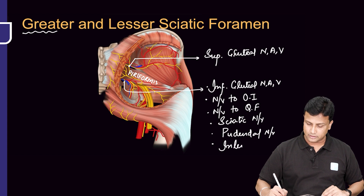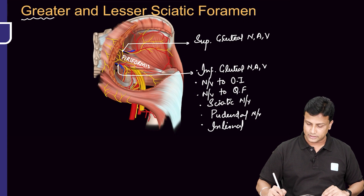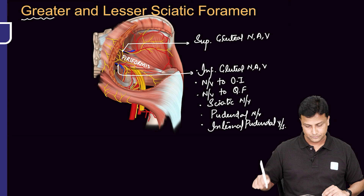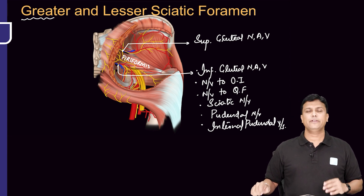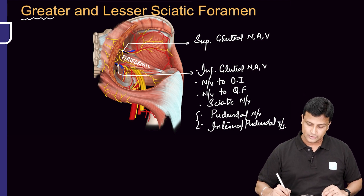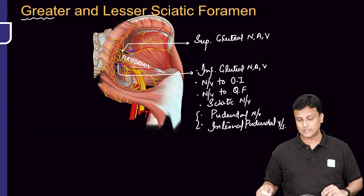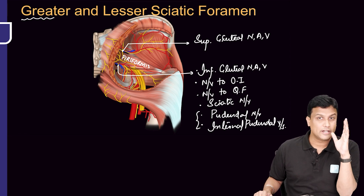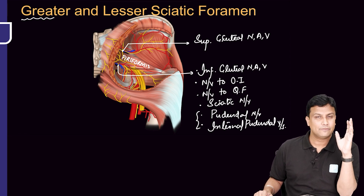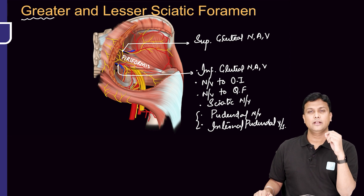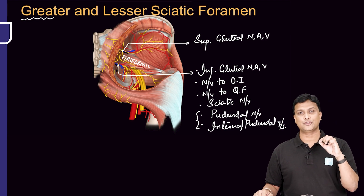Simply — internal pudendal vessels. Now the pudendal nerve, internal pudendal artery and vein — what is the story regarding these? Listen: they are actually going to pass through the greater sciatic foramen. After passing through the greater sciatic foramen, these three structures — pudendal nerve, internal pudendal artery and vein — are going to take a turn.